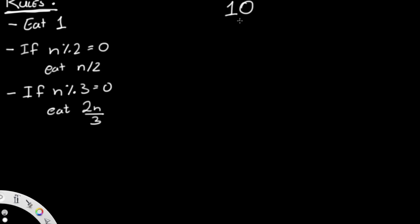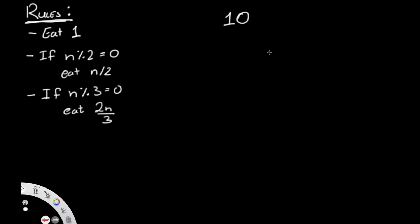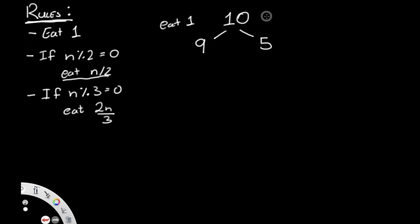Starting with 10 oranges, what can we do? We can eat one orange, leaving us with 9 — I'm going to represent this as a tree. The other option: 10 is divisible by two, so we can eat N/2 oranges, eating five and leaving us with five. So from 10 we have two branches: 9 and 5.